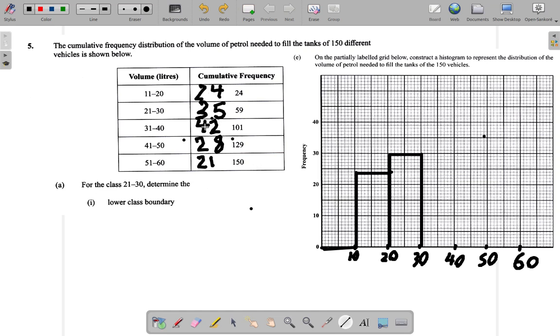Then 42 is the class 31 to 40. So the boundaries can be as small as 30.5. So 30.5, you go up to 42. And up to 40.5, 40.5, 42.